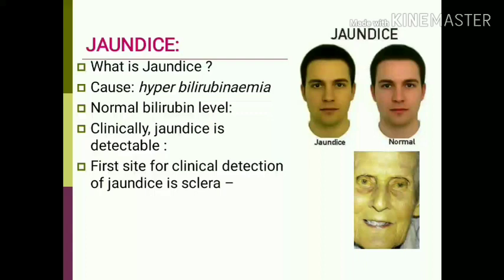Normal bilirubin level is 0.2 to 0.8 milligram per deciliter. Clinically, jaundice is detectable when plasma bilirubin level exceeds 2 to 3 milligram per deciliter. The first site for clinical detection of jaundice is the sclera, because sclera has the protein elastin which has extremely high affinity for bilirubin.